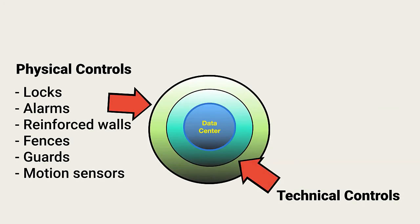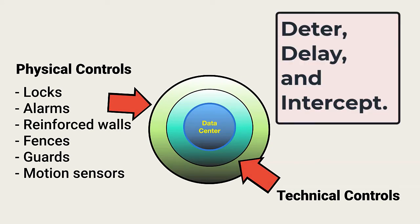Physical controls surround all information assets. The purpose of physical security controls is to delay intruders until they're detected and intercepted. They also serve to deter weakly motivated intruders.